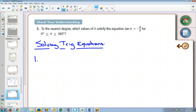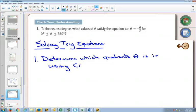So the first thing we're going to do is we're going to determine which quadrants theta is in using the CAST rule. So we're going to find out in this question, tan is negative. According to the CAST rule, which tells us where everything is positive, tan is positive in 3 and 1, so it must be negative in 2 and 4.